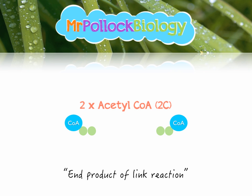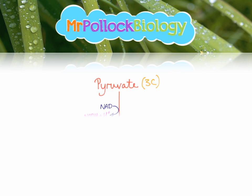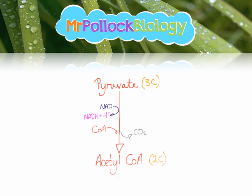Let's look at the whole process of the link reaction as one picture. We start with pyruvate — the three-carbon end product of glycolysis — and the entire link reaction can be summarized as pyruvate being oxidized to acetyl-CoA. This involves the reduction of NAD to NADH, the addition of coenzyme A, and the decarboxylation of pyruvate — the removal of CO2. Because glycolysis produces two pyruvate, we get two acetyl-CoA.